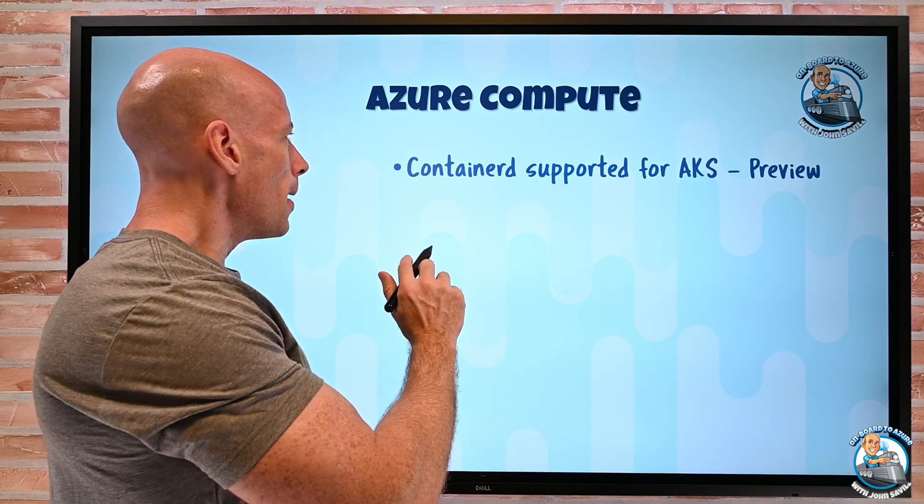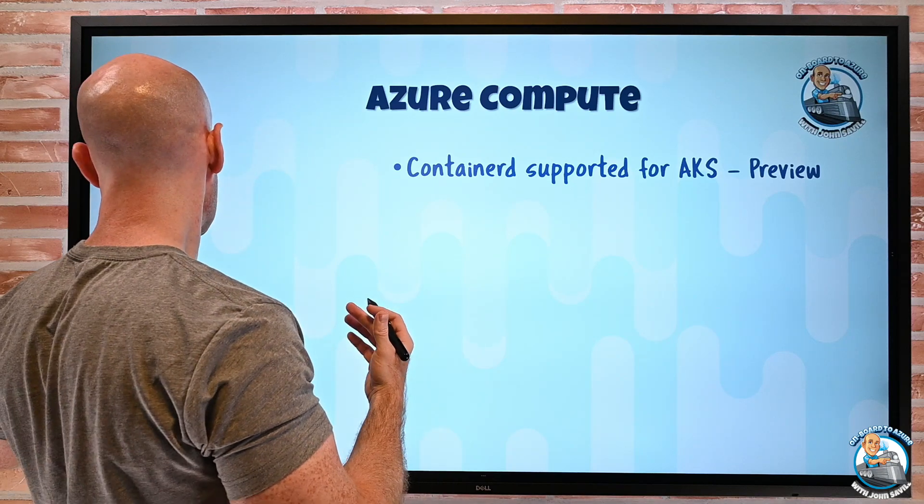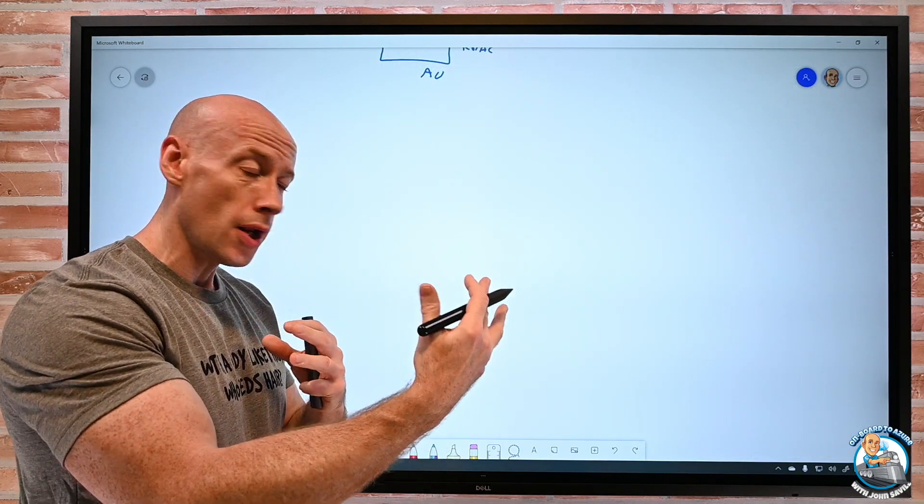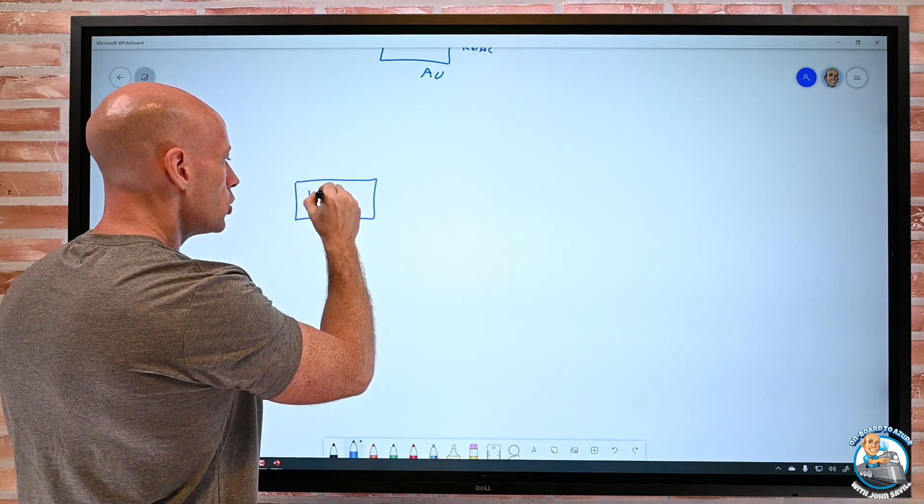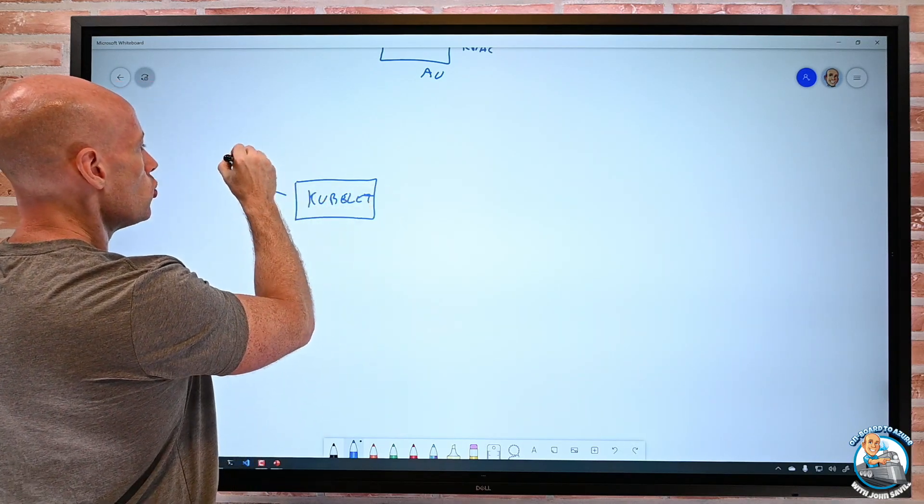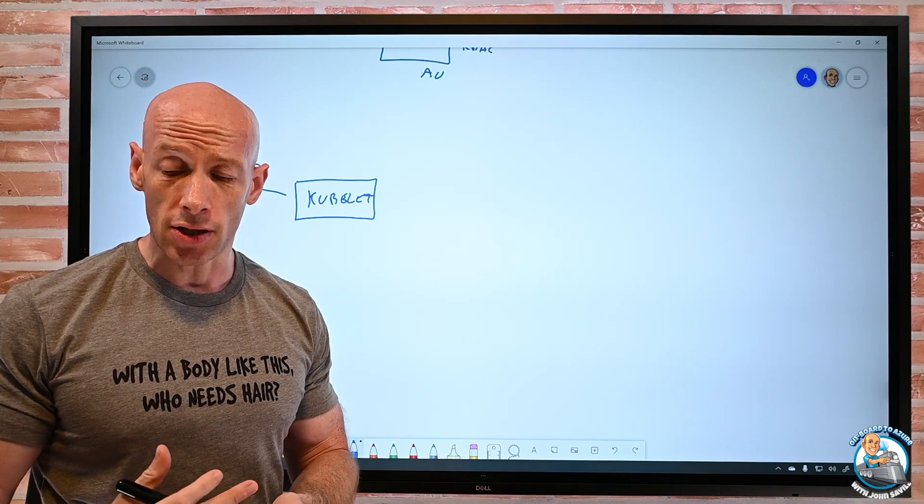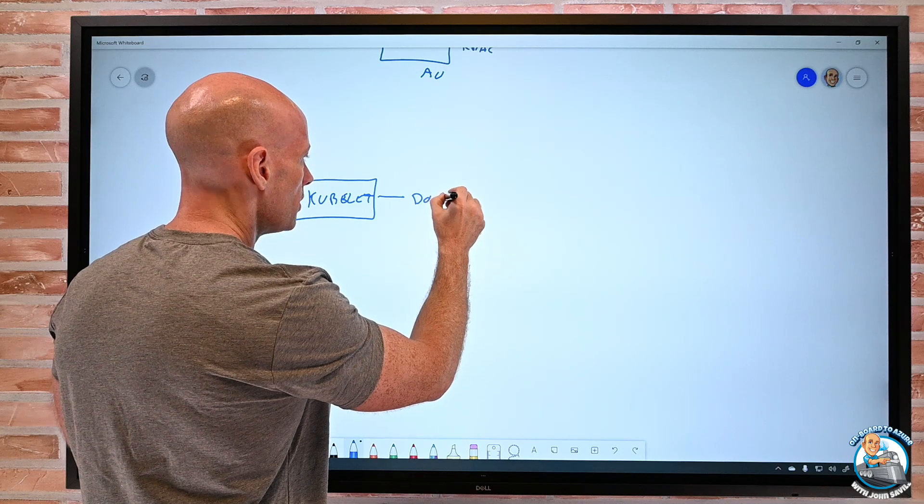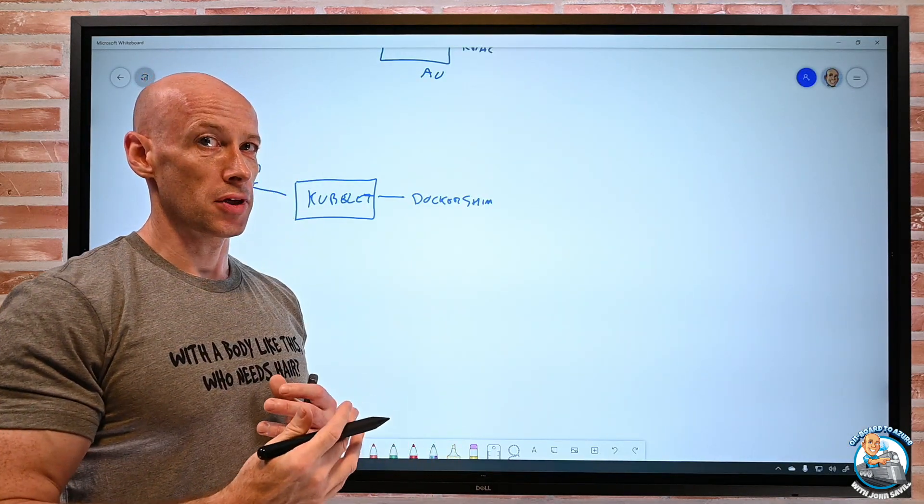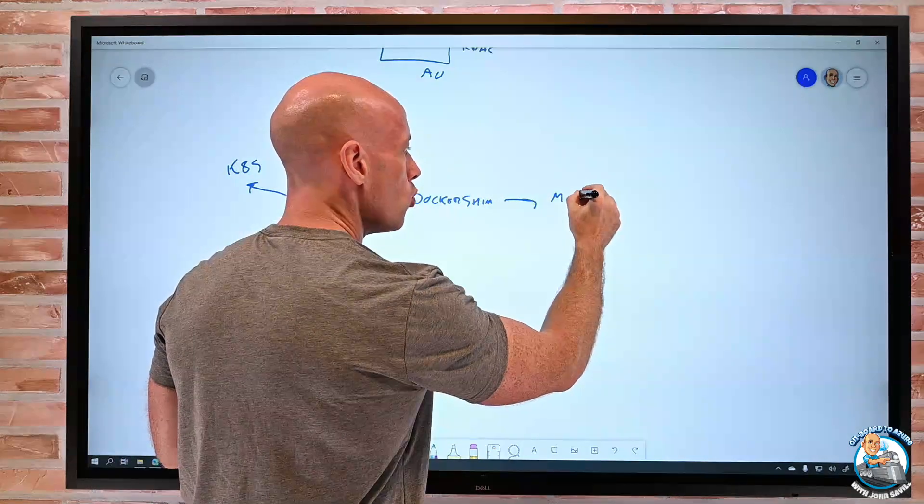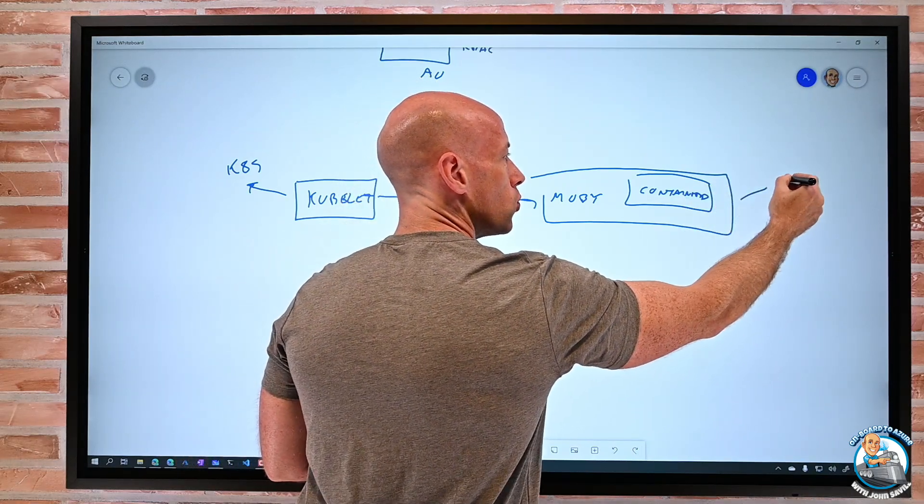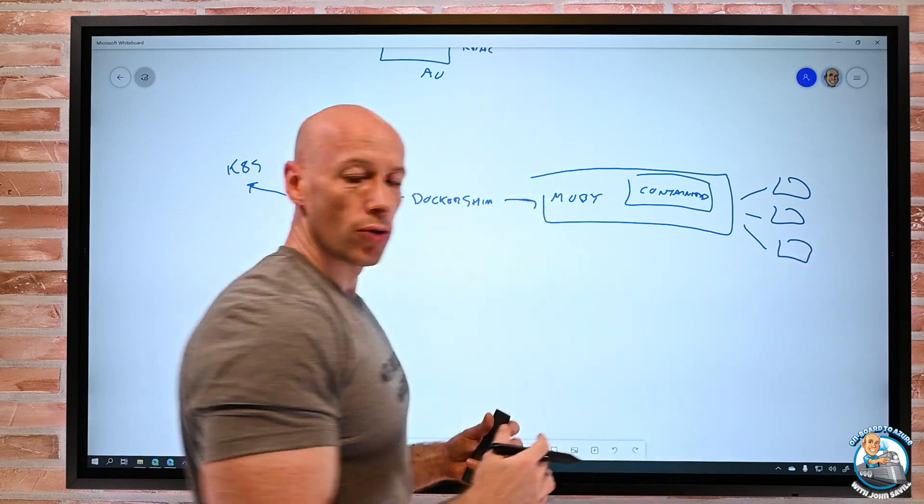On the Azure compute side, Containerd is now supported for the Azure Kubernetes service. So if you think about, we have these container runtimes. And today what we have is, you can think about on the host, this is the worker node, I kind of have the kubelet. So the kubelet is responsible for going and actually talking to the Kubernetes management infrastructure, the API service. And now today the way it actually works is there's this docker shim, and that docker shim actually runs on the docker engine. That then goes and talks to the Moby project.